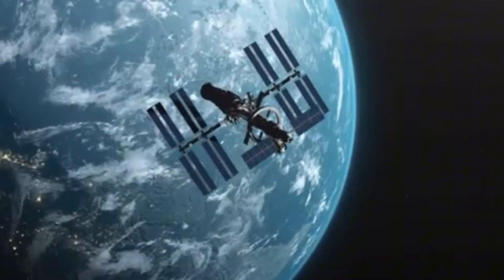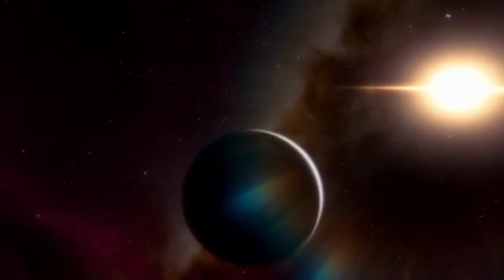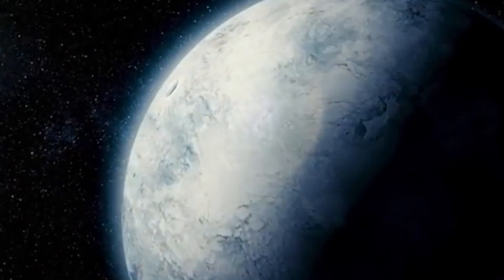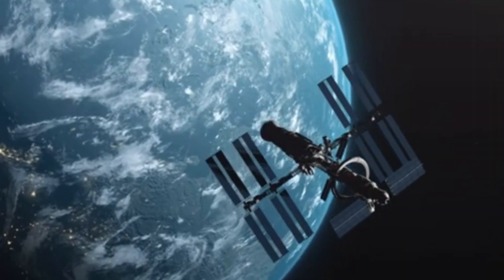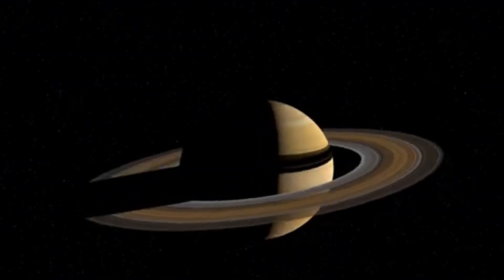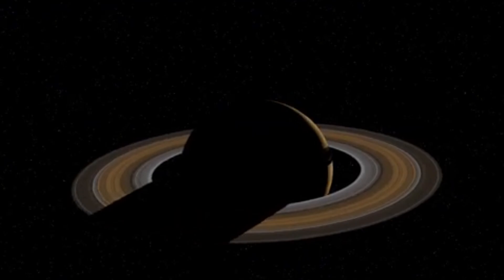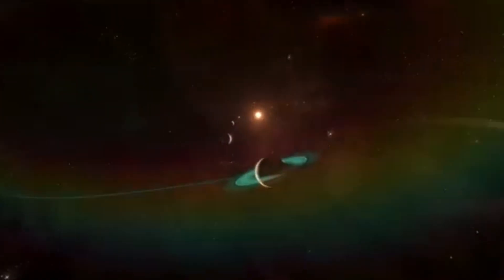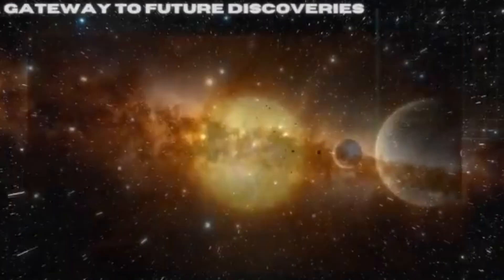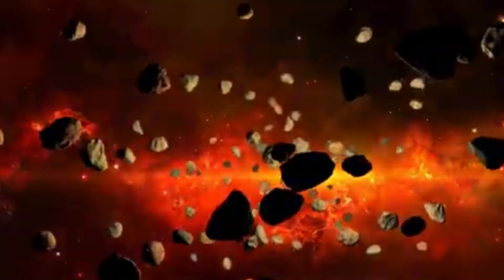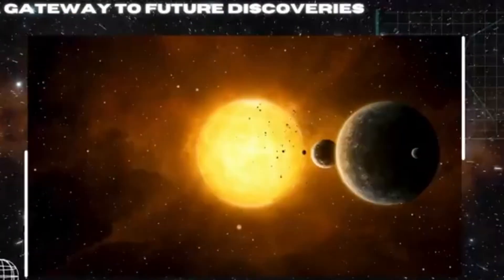They redefine our understanding of the structure and boundaries of the solar system. For much of history, the solar system was believed to end with Pluto. Yet the detection of objects like 2017 OF201 and others demonstrates that the outskirts of our solar neighborhood are teeming with mysterious, icy worlds that silently orbit the sun over millennia. These are the relics of the solar system's formation, remnants from a time when planets were still coalescing from clouds of gas and dust.